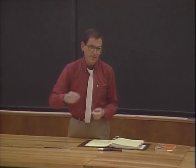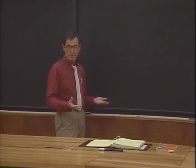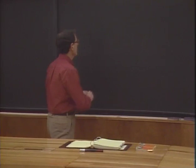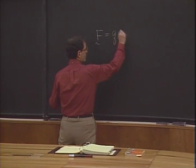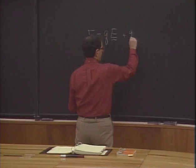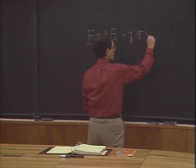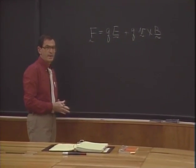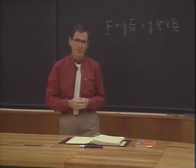What happens is that a current flows through the wire. That means the electric charges inside the wire are set into motion, which means something applied a force to them. The force on the electric charge can either be equal to Q times an electric field, or it could be equal to the charge Q times the velocity of the charge crossed into the magnetic field. That's our equation.